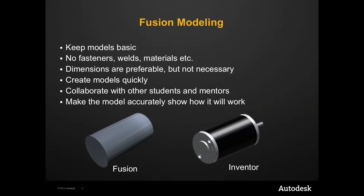Now for some tips for effectively using Fusion to express your ideas. First, keep models basic — how things will function is more important than how they look. For example, if you want to model a motor, it should look like this right here and not like this. You can go into this kind of detail later when we get to the Inventor stage, but right now, this is what a motor should look like because it is quick, fast, and easy.